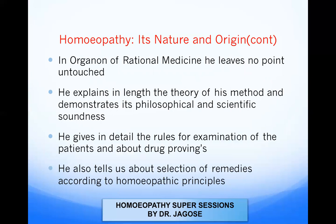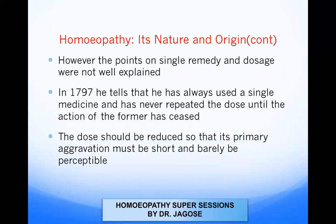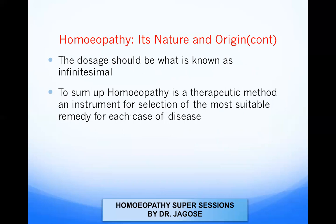He gives in detail the rules of examination of patients and about drug proving, and also tells us about the selection of remedies according to homeopathic principles. However, the points on single remedy and dosage were not well explained. In 1797, he tells us that he always used a single medicine and never repeated the dose until the action of the former had ceased. The dose should be reduced so that its familiar aggravation must be short and barely perceptible. The dosage should be what is known as infinitesimal. To sum up, homeopathy is the therapeutic method and instrument for the selection of the most suitable remedy for each case of disease.